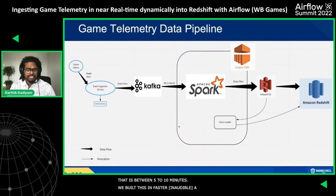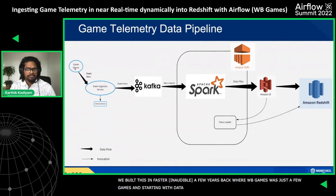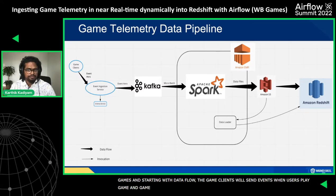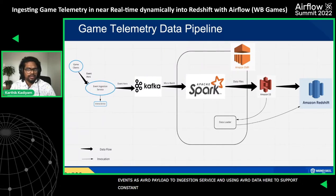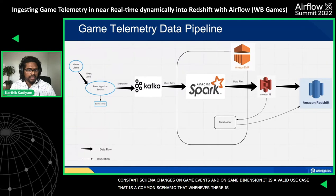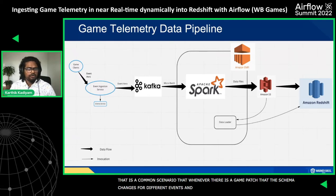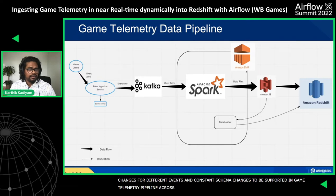We built this infrastructure a few years back when the WB game slate was just a few games. The game clients send events whenever users play — generating events per each action in the game — and these clients send those events as Avro payloads to our internal ingestion service. We use Avro data format to support constant schema changes on game events, which is a common scenario whenever there is a game patch.